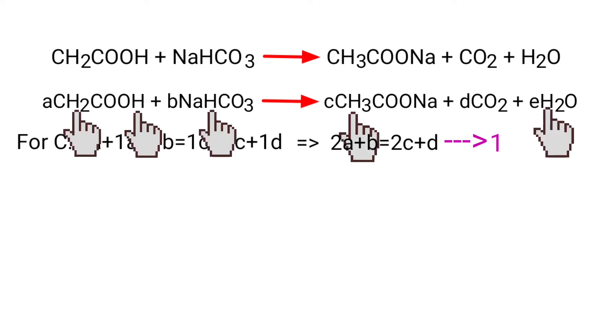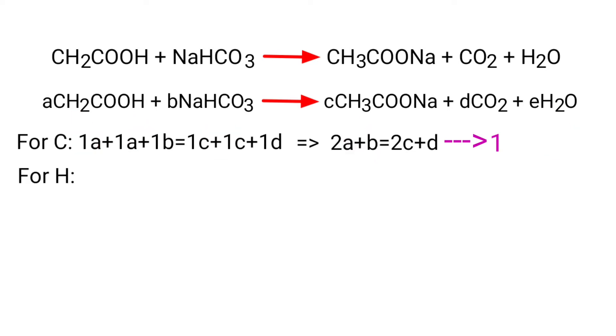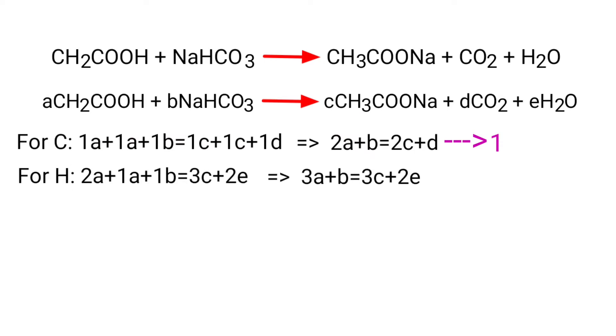For Hydrogen: 2A plus 1A plus 1B equals 3C plus 2E. So 3A plus B equals 3C plus 2E.